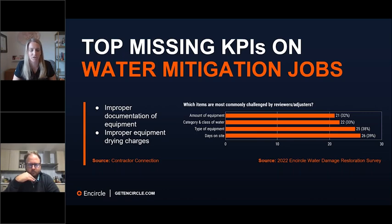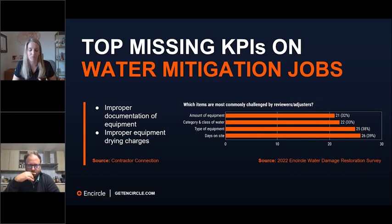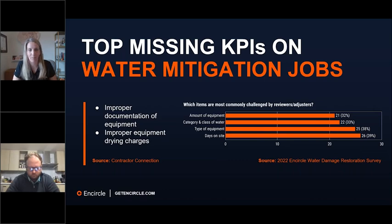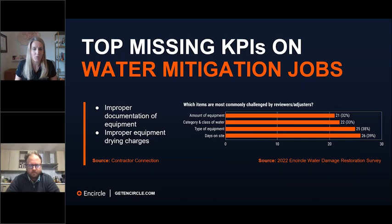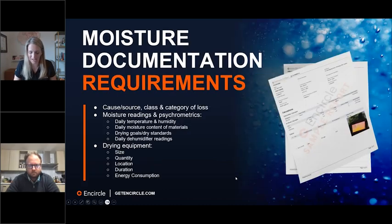This really matches survey data from other sources. Contractor Connection recently let us know that the top two KPIs missed on water jobs are number one, improper documentation of equipment, and number two, improper equipment drying charges. Last summer we surveyed over 250 restorers about the top line items that were challenged, and those four things were days on site, equipment type, category and class of water, and the amount of equipment. Everything you're doing, you need to justify the work that was done. At N-Circle we like to say: if you didn't document it, it didn't happen. That's the why behind Hydro.